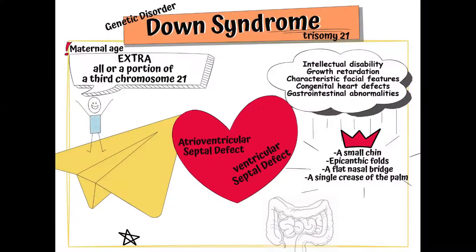Congenital heart defects are the most common cause of morbidity and mortality associated with Down syndrome, particularly during the first two years of life. The most common heart defect is an atrioventricular septal defect, and the second most common is a ventricular septal defect.